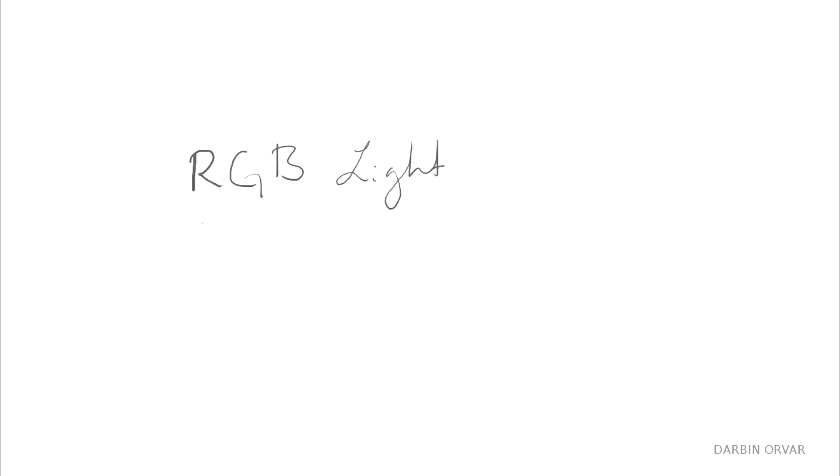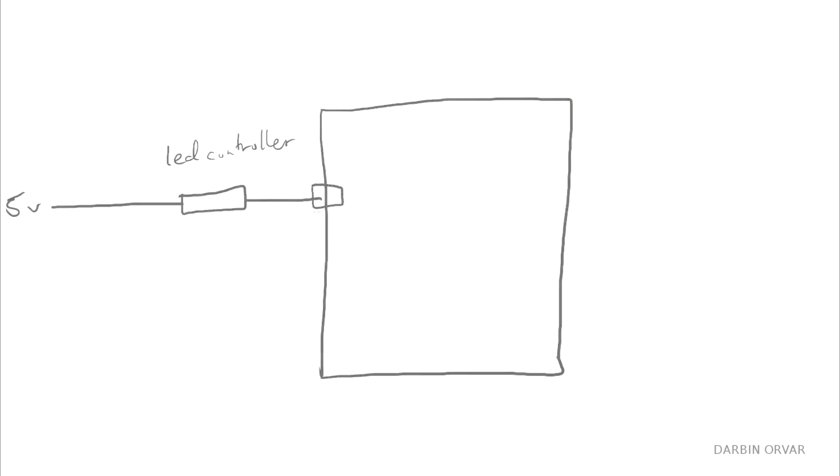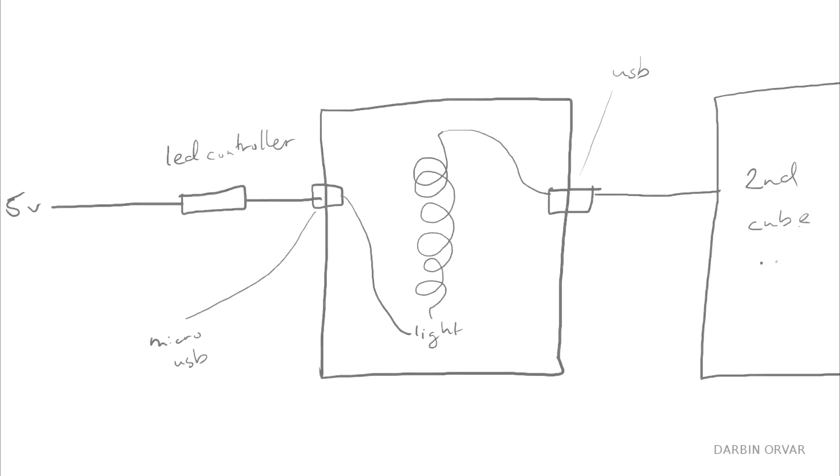Now for the electronics. When dealing with colored LEDs, all connections need four points to carry each color, which means there is quite a bit of soldering to do. Here's a basic diagram of how everything is connecting. So we start with five volt power, which connects to the LED controller, which came with the lights. And that connects to a micro USB, which connects to the light strip inside. And the other end of the light connects to a regular USB, and the same is replicated on the second, or third, or however many cubes you make.